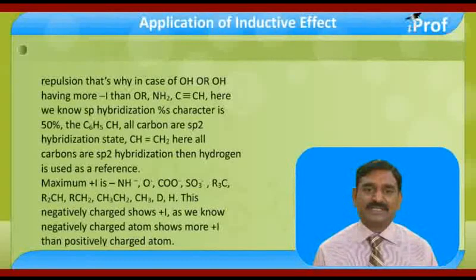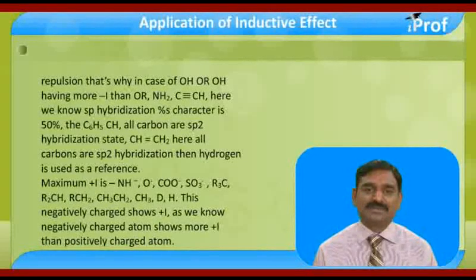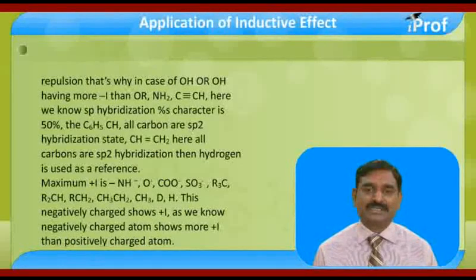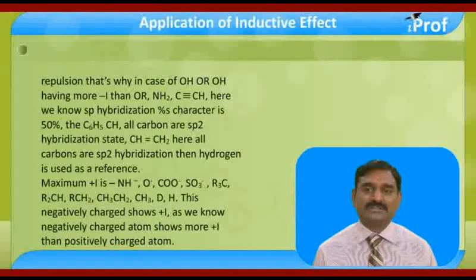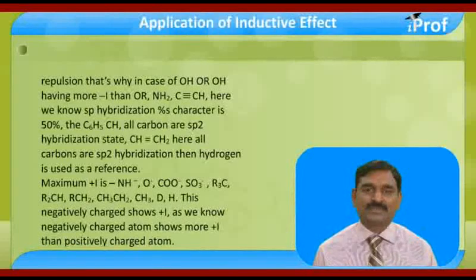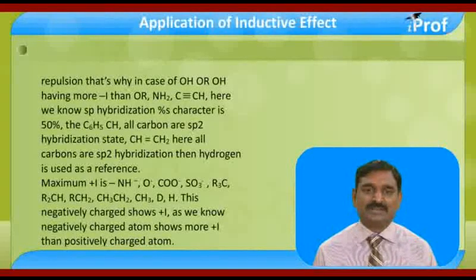And for plus-I order: NH⁻, O⁻, COO⁻, SO3⁻ — these negatively charged groups show plus-I. This negatively charged group shows more plus-I. We know negatively charged groups show more plus-I in comparison to neutral groups.